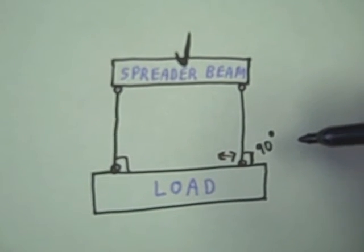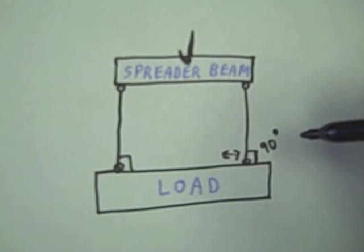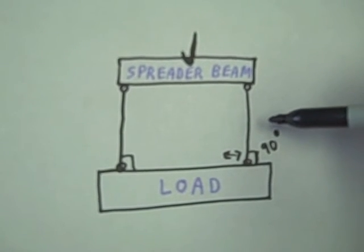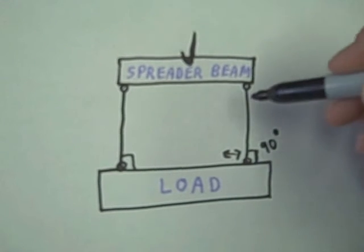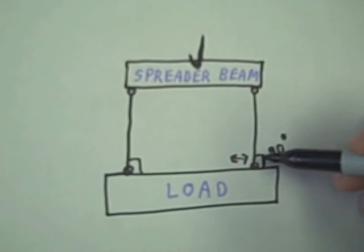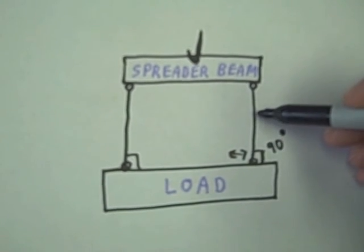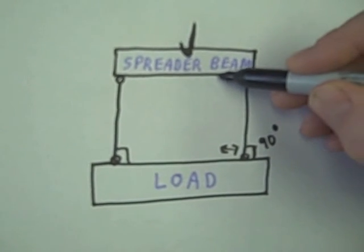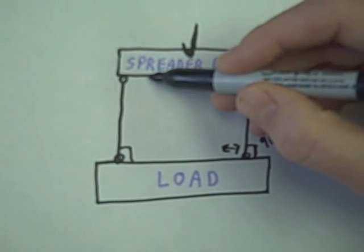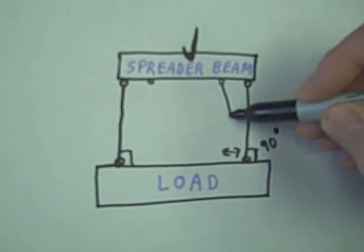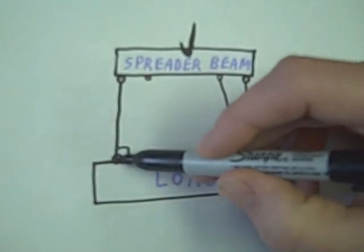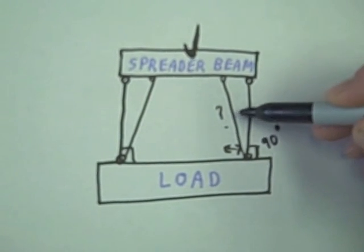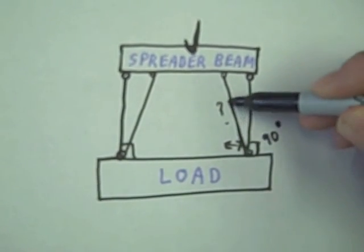In the next lesson, we will learn how to calculate the extra forces on slings that are not connected at a 90 degree angle, but yet still have a spreader beam. For example, if we had it connected at an angle, how do we calculate what is the force on that strap?